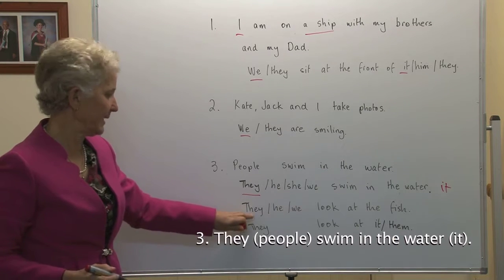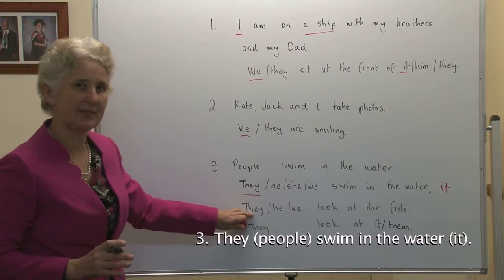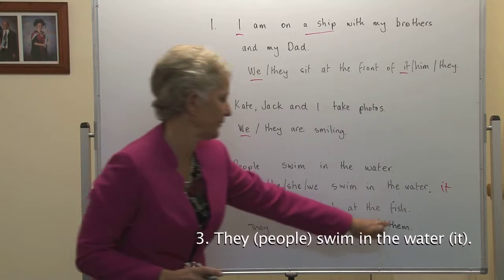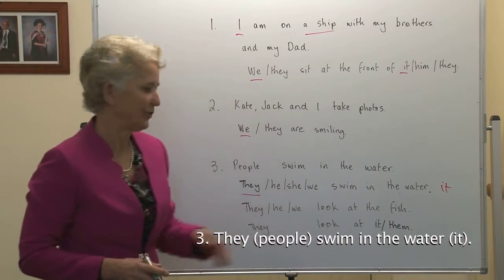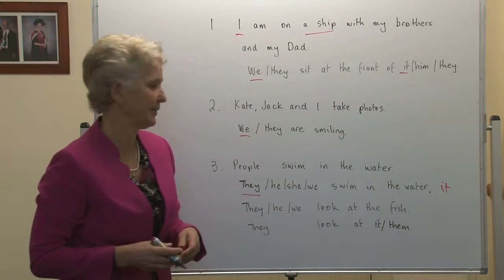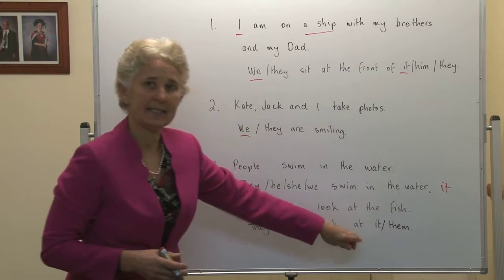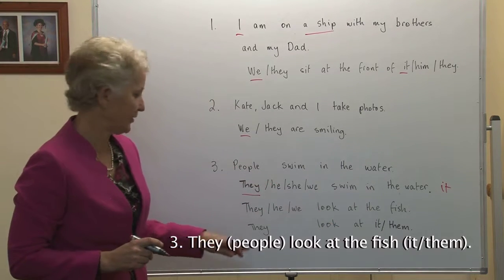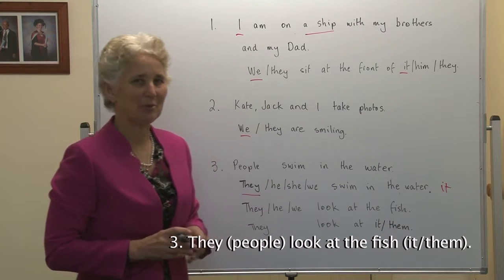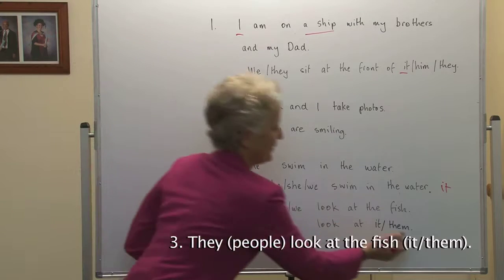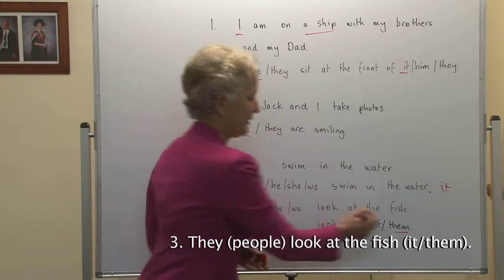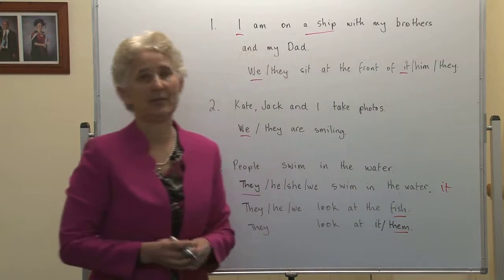They look at the fish. Once again, they is the subject of the sentence because it is they who are looking. What are they looking at? The fish is the object. In English, the fish can either be singular or plural, depending on how many fish we are looking at. In this case, if they're just looking at one fish, we would say they look at it. But there are a lot of fish in this beautiful part of the ocean, so they look at them. Them is an object, it is plural, referring to the fish.